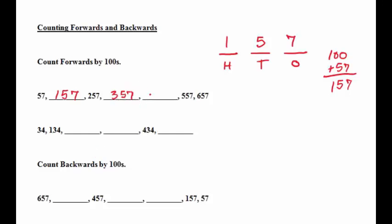Now the 3 becomes a 4, and we have 457, 557, and 657.